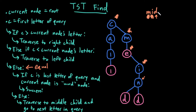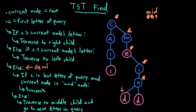If d is greater than my current node's letter i — nope, d is not greater than i, this is false. Else if d is less than i — yes, this is true — traverse to the left child. Now if d is greater than d — false. If d is less than d — also false. Else, they're equal. If d is the last letter of my query — oh yes, it is — and my current node is a word node — yes it is, it's pink, it's a word node. Success! Yay, 'mid' exists in this TST.